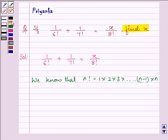Similarly, we have 8 factorial as 8 multiplied by 7 multiplied by 6 factorial, and 7 factorial as 7 multiplied by 6 factorial.